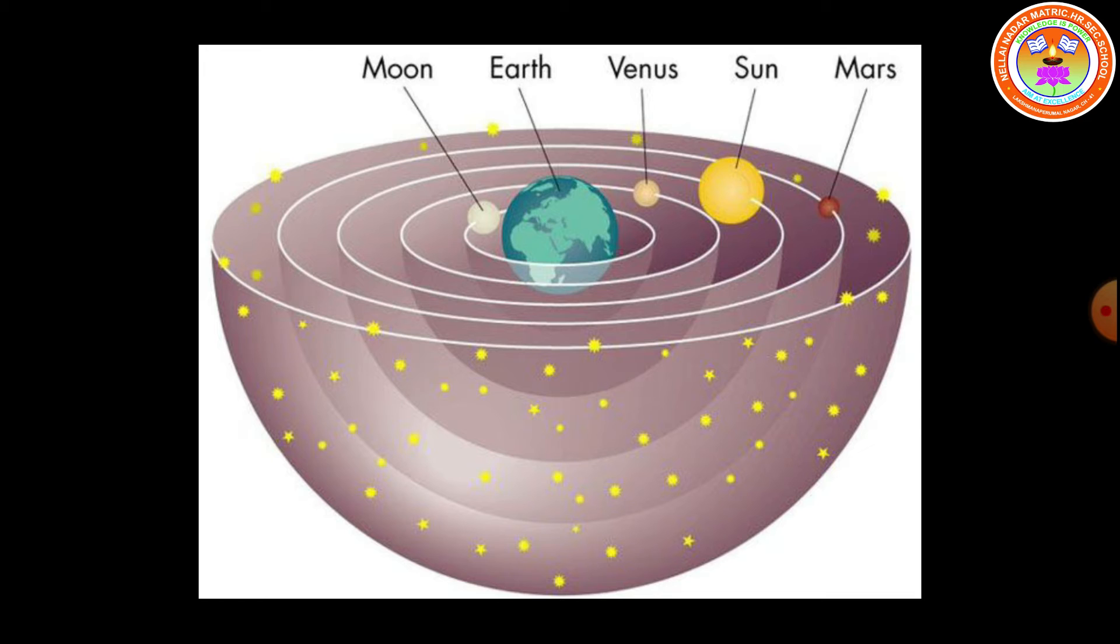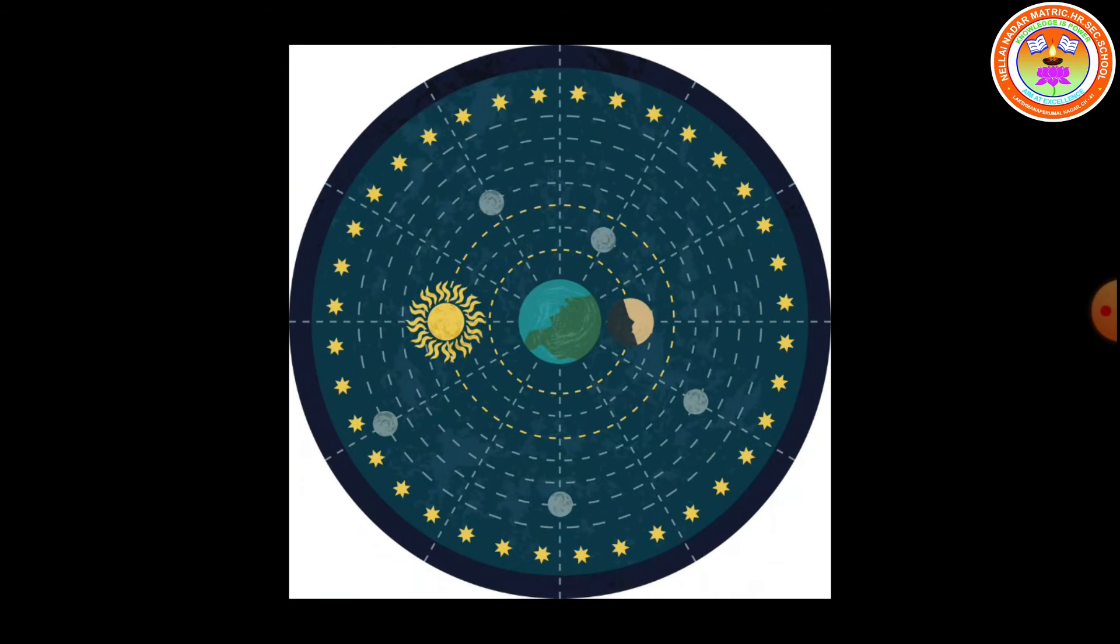Giving us an impression that all these objects are going around the Earth. Just as in a moving bus, the distant mountains and trees appear to move backwards. Perhaps Earth is really spinning, and that is why sun, moon, and stars appear to go around the Earth.